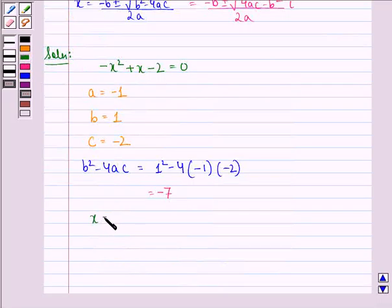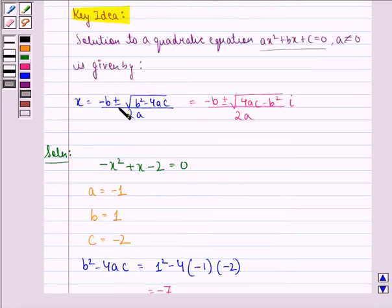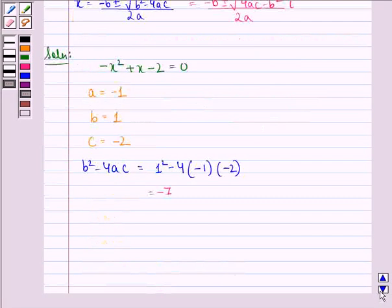From the key idea, we have x = (-b ± √(4ac - b²)) / 2a. Therefore, we get x = (-1 ± √(-7)) / (2 × -1).